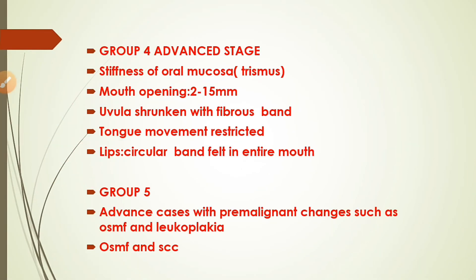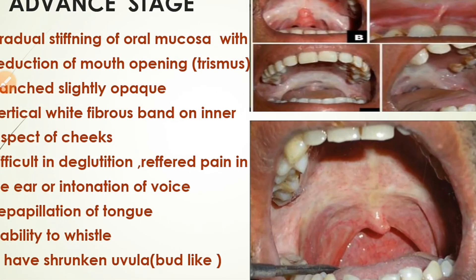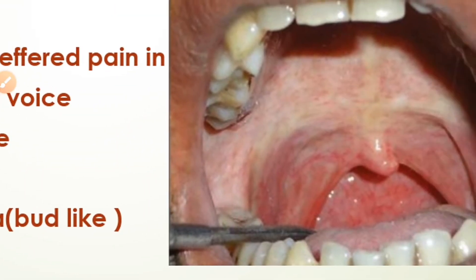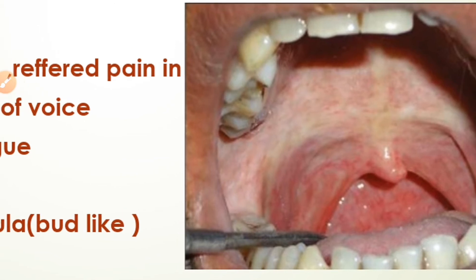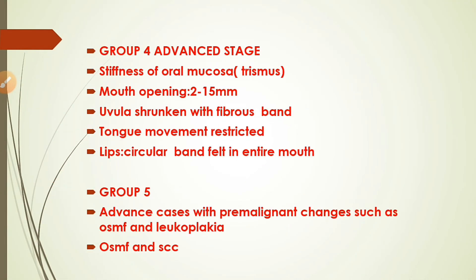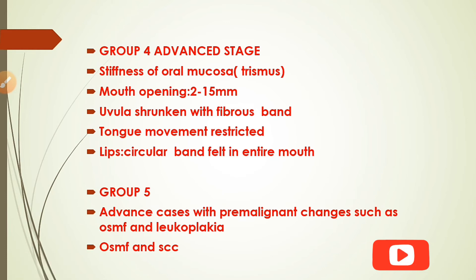Group 4 (advanced stage): stiffness of oral mucosa with trismus; mouth opening is reduced to 2–15 mm. The uvula becomes shrunken and develops into a fibrous band, becoming hard. Tongue movement is restricted and circular fibrous bands are felt around the entire mouth, including in the lips.